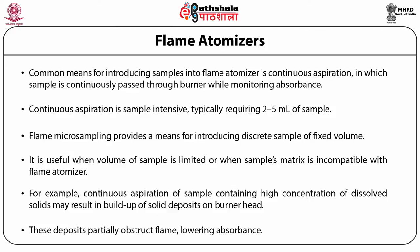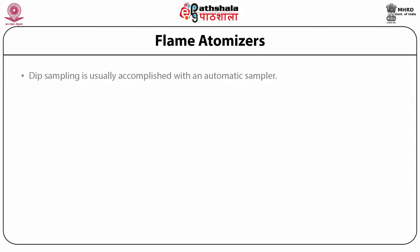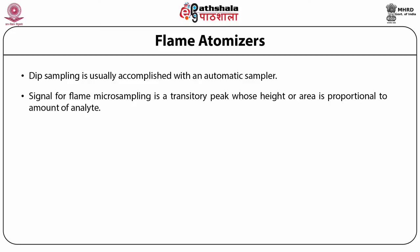These deposits partially obstruct the flame, lowering the absorbance. Flame microsampling is accomplished using a micropipette to place 50 to 250 µL of sample in a Teflon funnel connected to the nebulizer, or by dipping the nebulizer tubing into the sample for a short time. Dip sampling is usually accomplished with an automatic sampler. The signal for flame microsampling is a transitory peak whose height or area is proportional to the amount of analyte injected.